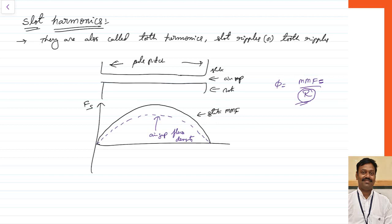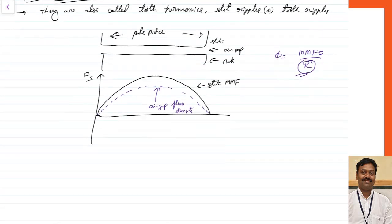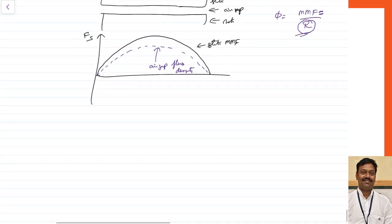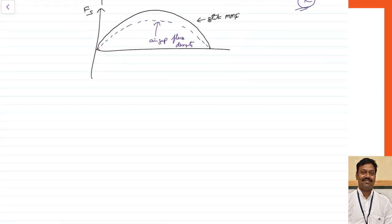This is what we assume, but practically the rotor will not be smooth and the stator also will not be smooth. Let us assume the case that the stator is smooth and the rotor is not smooth. The same analysis can be extended for the case of both stator and rotor slotting.